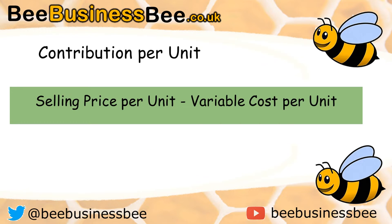You may be asked to calculate the contribution per unit. The contribution per unit is that lower part of the break-even formula: the selling price per unit minus the variable cost per unit. That tells you how much profit you're making on each unit, which will then go towards paying for those fixed costs.